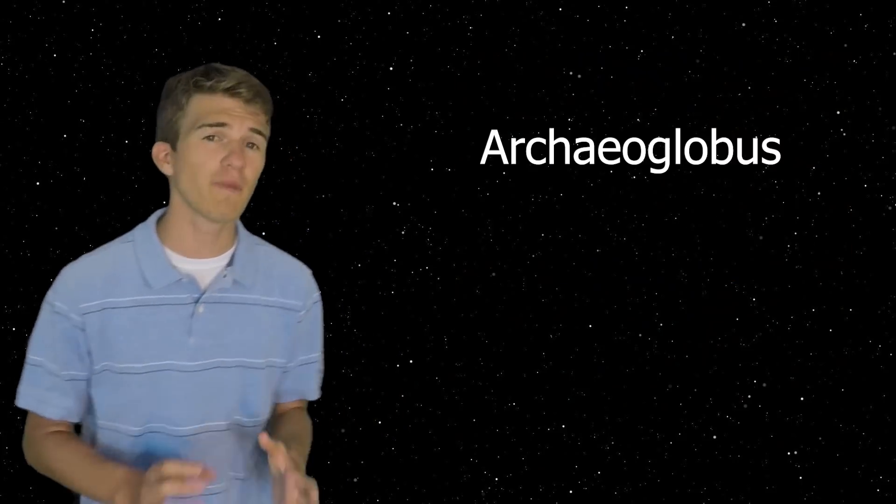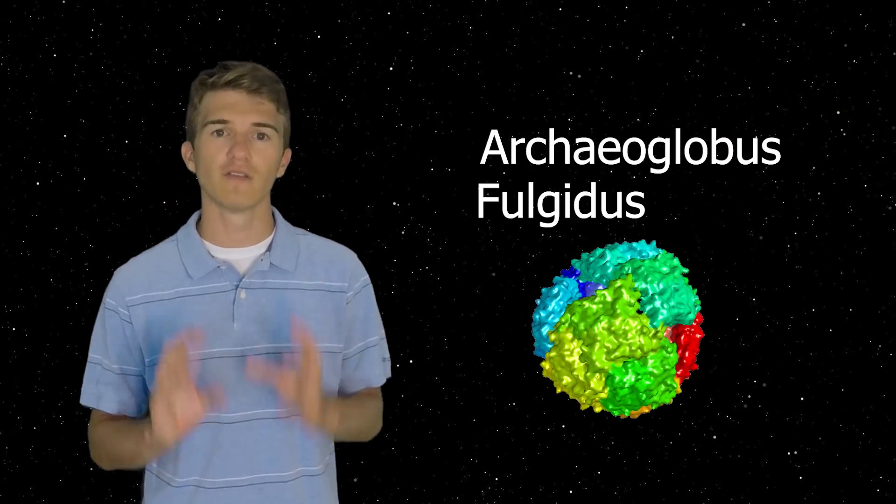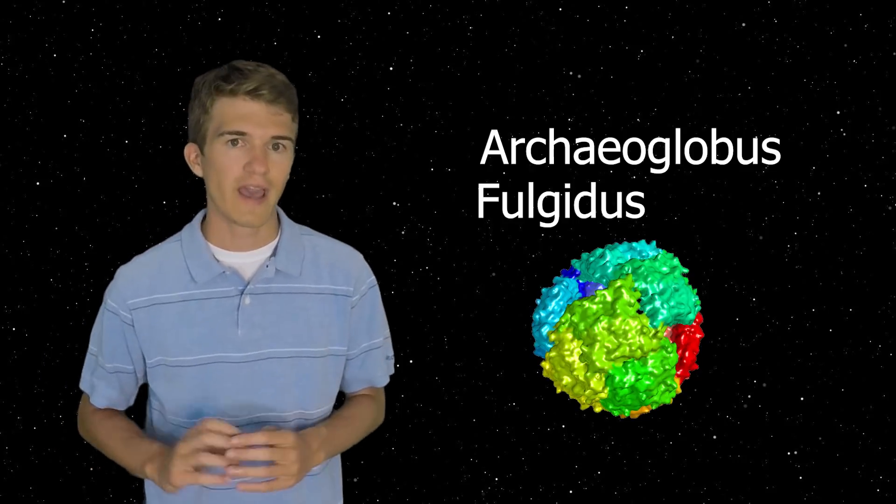And lastly, when we talk about Archaeoglobus fulgidus, there's a lot more to learn about this organism. It only lives in really high temperatures around 65 to 90 degrees Celsius. And having to keep that type of organism at such a high temperature would also cost a lot of energy. So we're at this weird balance between space consumption and how much energy we actually want to use.